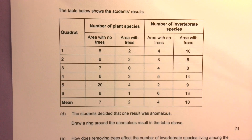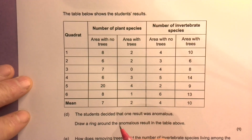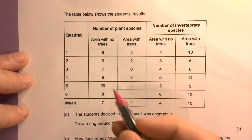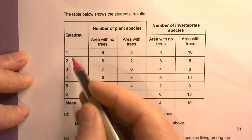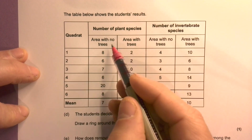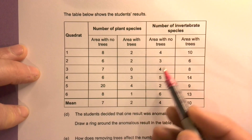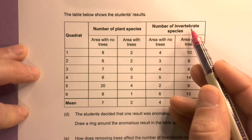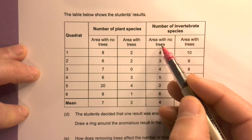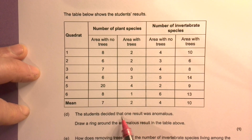The table below shows the students' results. These are different quadrats, number of plant species, no trees, with trees, and then invertebrate species with trees, no trees, with trees. The students decide that one result was anomalous.